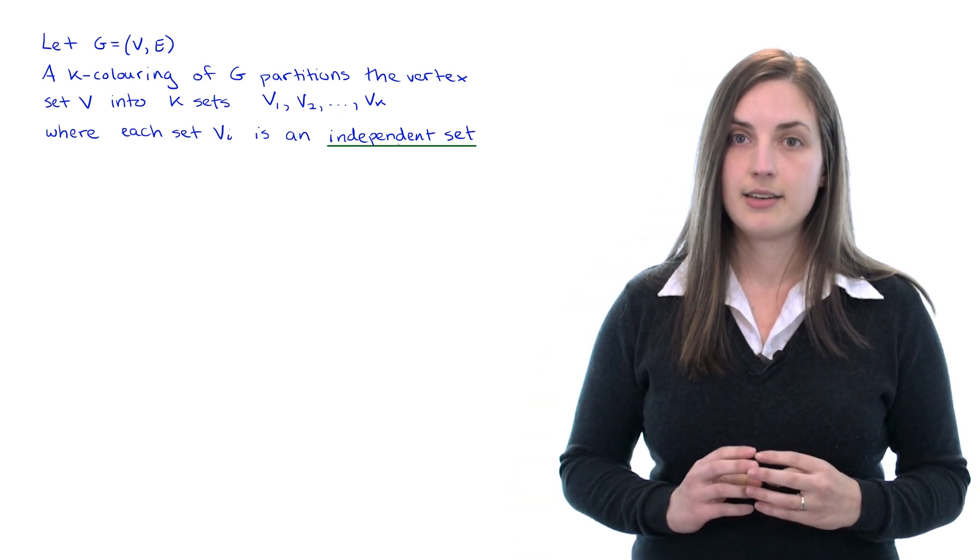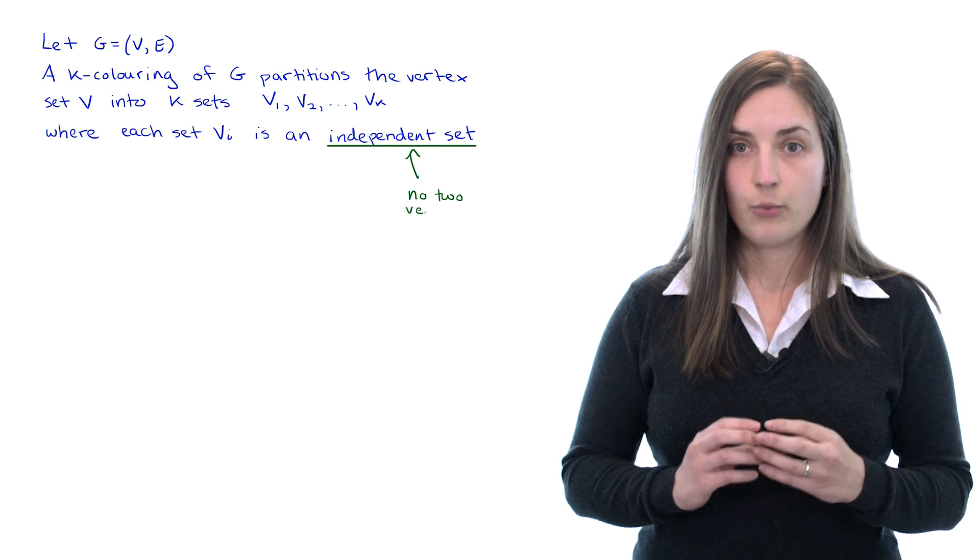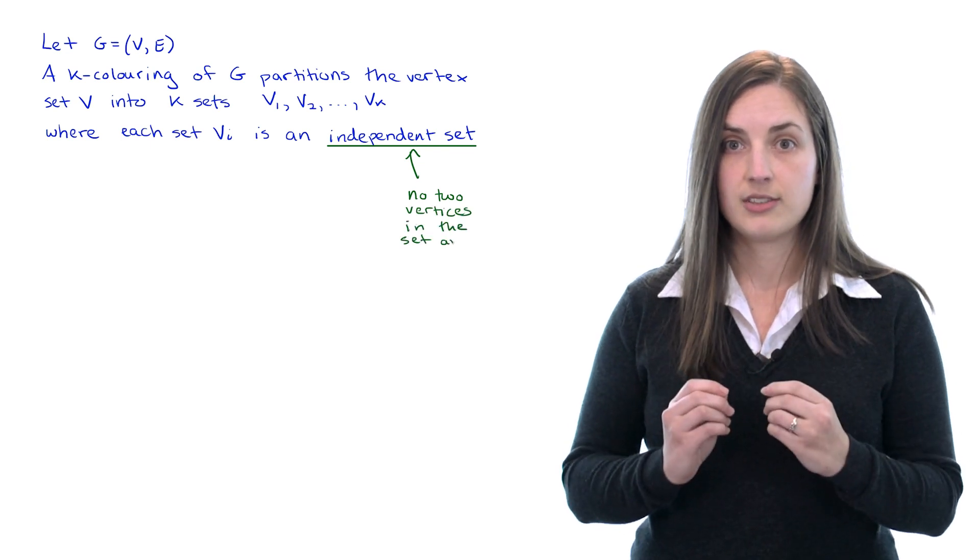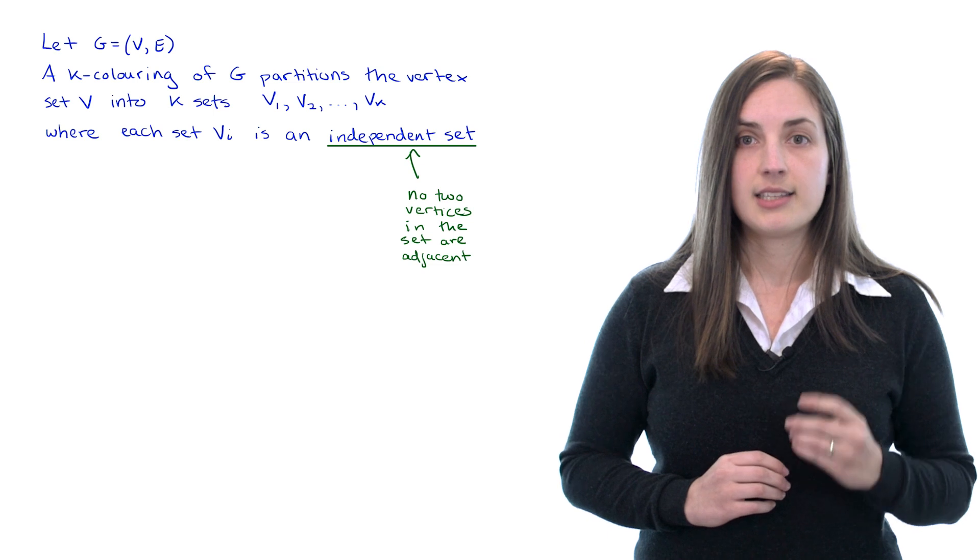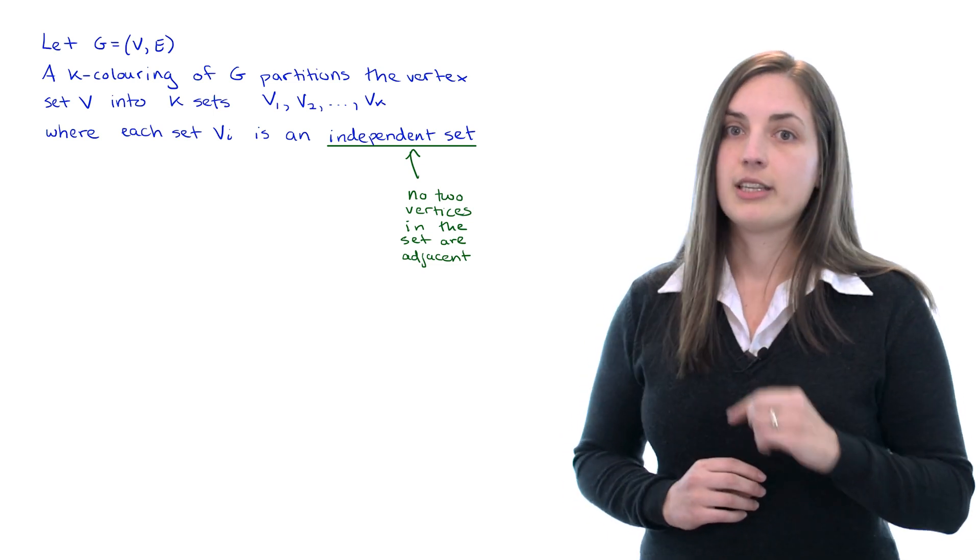Recall that an independent set is a set of vertices in which no pair of vertices are adjacent. We've seen independent sets in a previous video and links are in the description below.